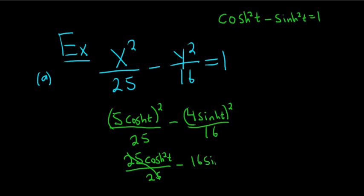And this is over 16, and likewise this goes away here. So you get cosh squared minus sinh squared, so you get 1. So basically, these parametric equations solve this equation.